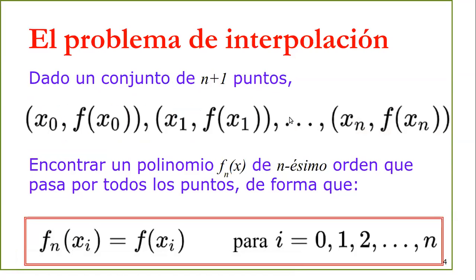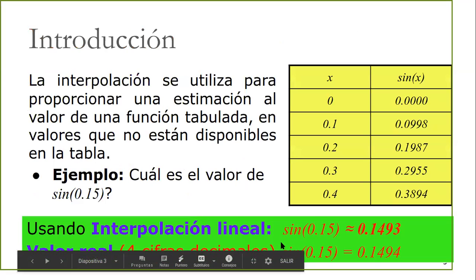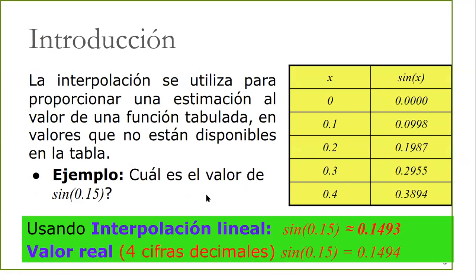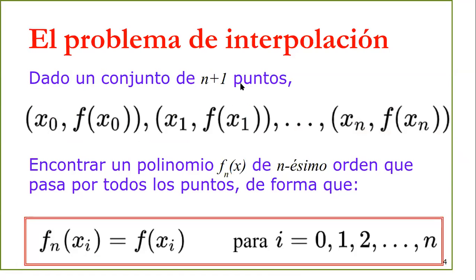¿Qué es el problema o cómo planteamos un problema de interpolación? Siempre necesitamos un conjunto de puntos. Hablamos de n+1 puntos para estimar un polinomio de grado n. Por ejemplo, para hacer una interpolación lineal necesitaríamos 2 de los 5 puntos que tenemos. Con los 5 puntos que tenemos podríamos estimar un polinomio hasta de orden 4. A eso hacemos referencia cuando hablamos de un conjunto de n+1 puntos.